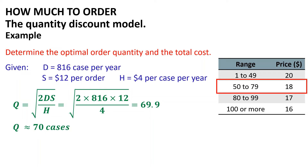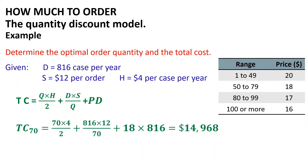Using TC equals Q multiplied by H divided by 2, plus D multiplied by S divided by Q, plus P multiplied by D: TC at Q = 70 equals 70 multiplied by 4 divided by 2, plus 816 multiplied by 12 divided by 70, plus 18 multiplied by 816, which equals $14,968. Because lower cost ranges exist, each must be checked against the minimum cost generated by 70 cases at $18 each.